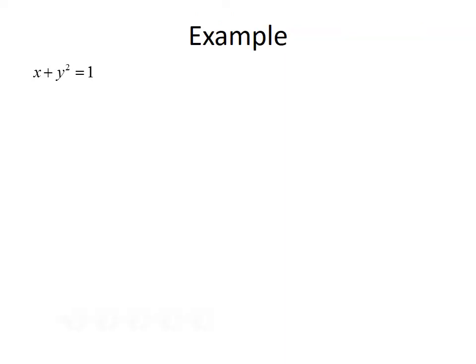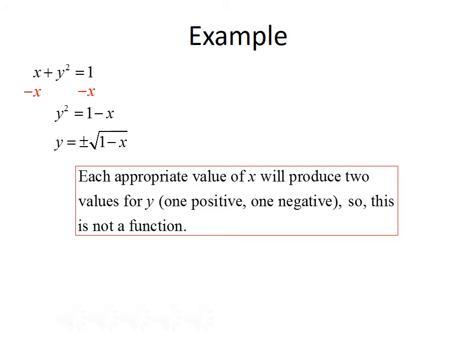Here's another example. Consider the equation x plus y squared equals 1. The first thing we want to do is solve for y. We begin by subtracting x from both sides, giving us y squared equals 1 minus x. To get rid of the square, we take the square root of both sides, and we get y equals plus or minus the square root of 1 minus x. For any x that we plug in, we would get two values of y — both a positive and a negative value. Since each x produces two y's, this is not a function.